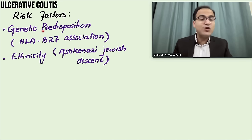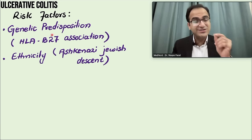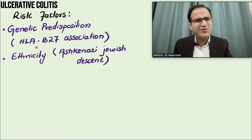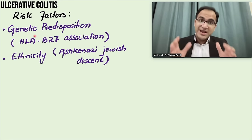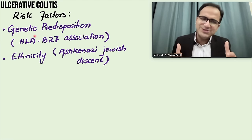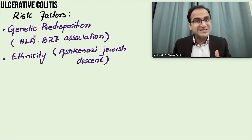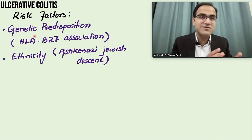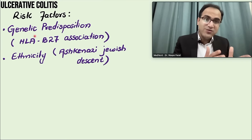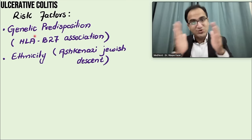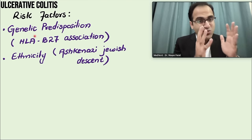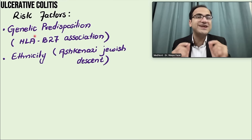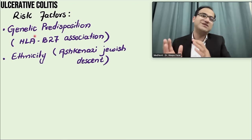The risk factors of ulcerative colitis include genetic predisposition — ulcerative colitis is associated with HLA-B27. As with ankylosing spondylitis, reactive arthropathy, psoriatic arthritis, and reactive arthritis, patients are HLA-B27 positive. Therefore, patients with ulcerative colitis usually have a strong association with skeletal problems like arthritis and ankylosing spondylitis, because of the genetic predisposition of HLA-B27.